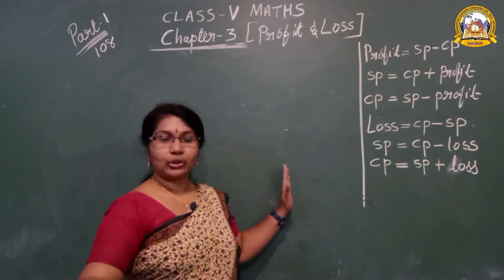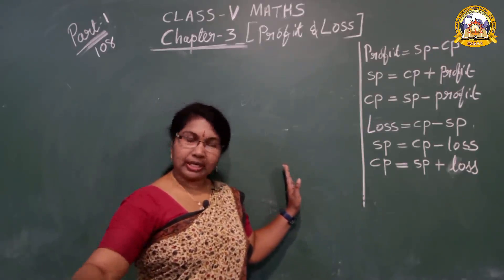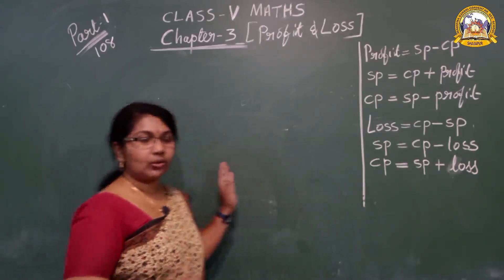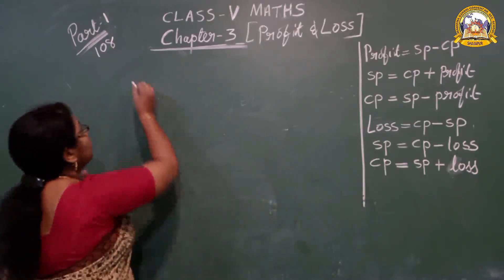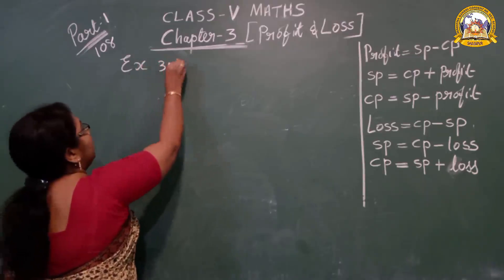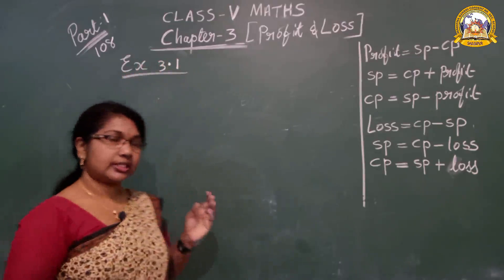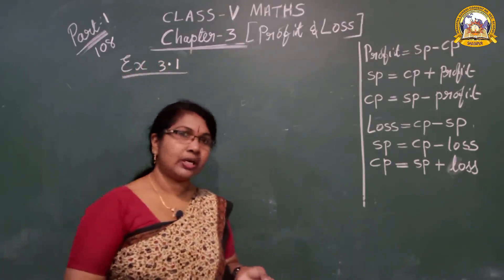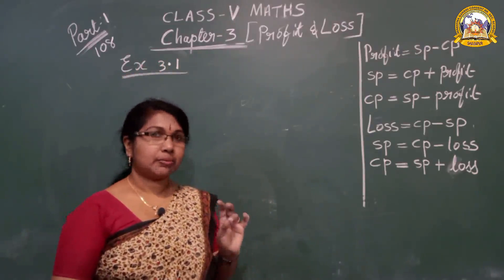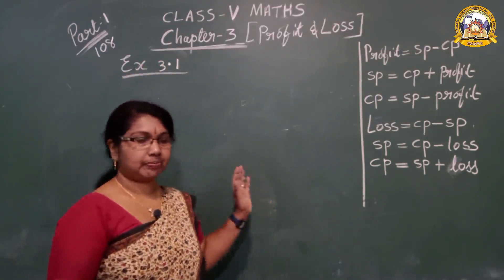Now I will show you some exercises so you can understand very easily. Now Exercise 3.1. Once more — CP means Cost Price, SP means Selling Price.